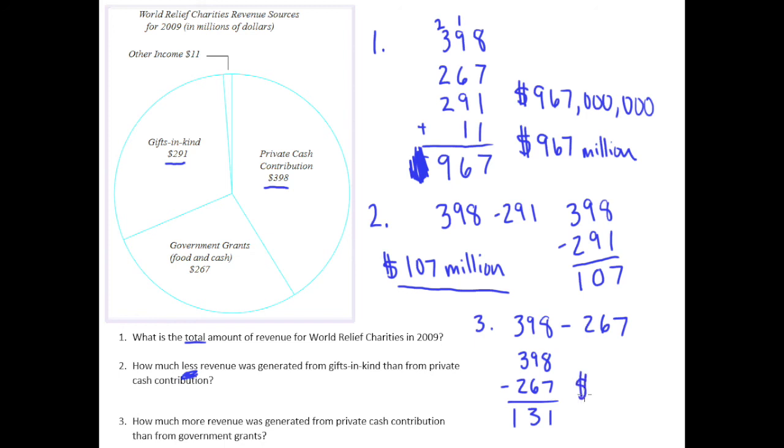So our answer here is 131 more million dollars. Or maybe I didn't say that very well, but 131 million dollars. Sorry, I kind of ran out of space there. 131 million dollars more in private cash contribution than from government grants. Sorry, I'm just trying to make my label work here. There we go.